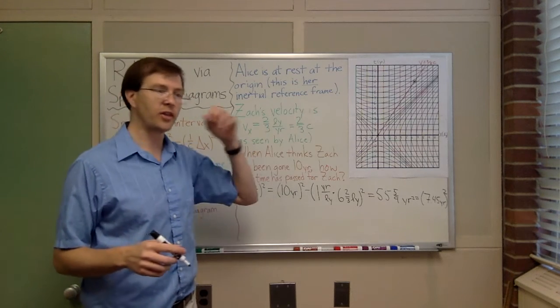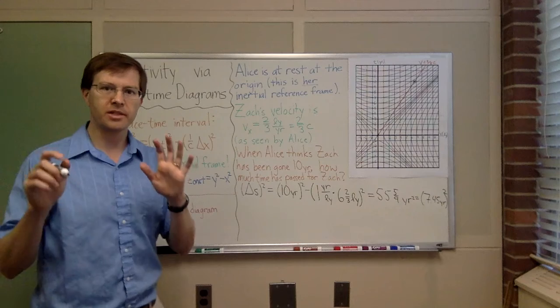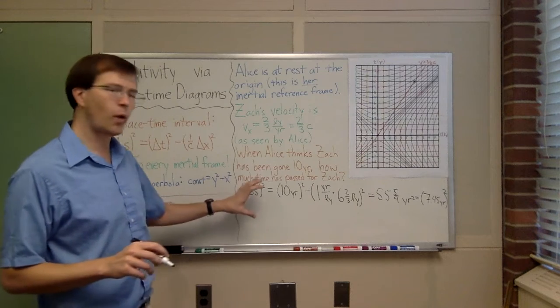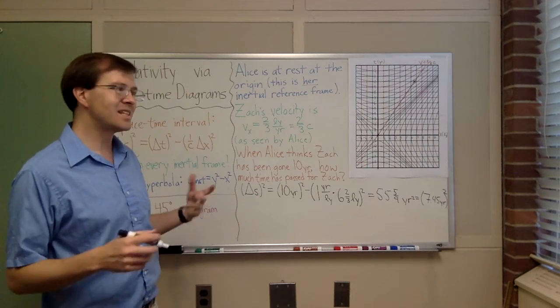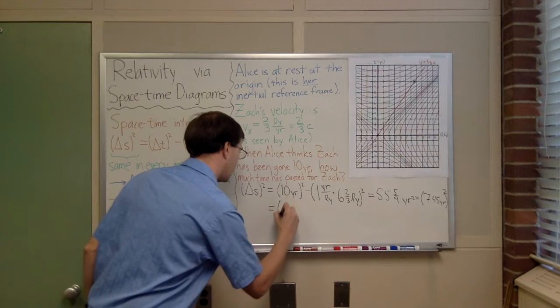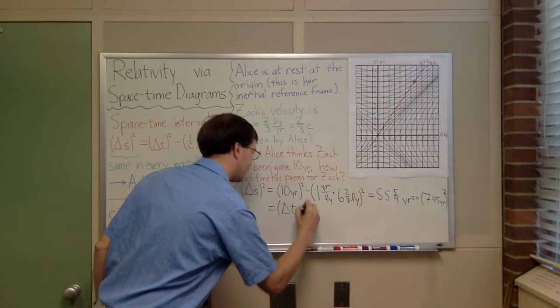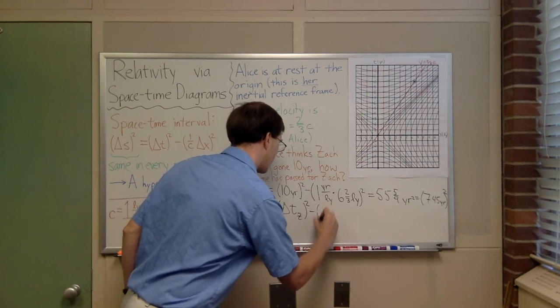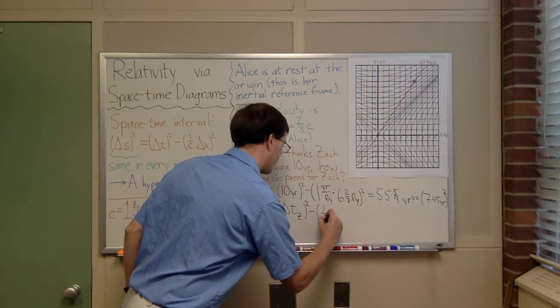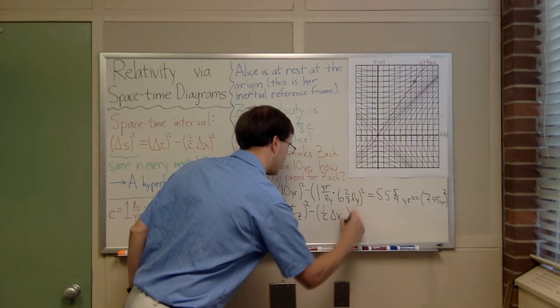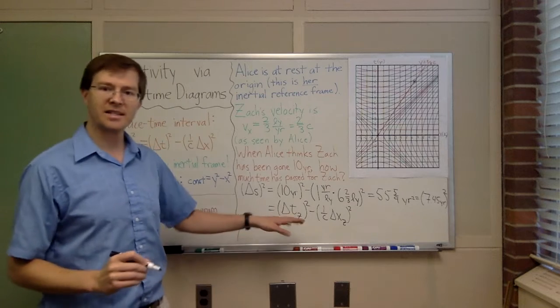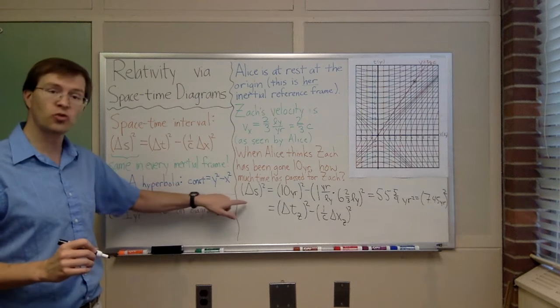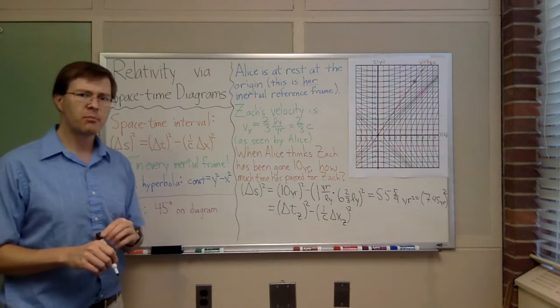Then I can say, what would Zach have calculated for that same time? Again, this is just using the equations, we'll see how we can skip the equations using the diagram in a minute, but I want to compare the two. If I used equations, I would say that this also has to be equal to delta t as seen by Zach, so I'll do delta t z, as measured by Zach, minus one over the speed of light times delta x as seen by Zach squared. That's the same idea, as long as the same observer is measuring t and x, then we just do the difference. They have to agree, the numbers have to be the same.